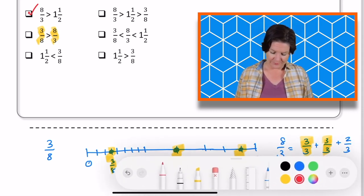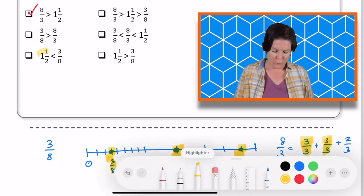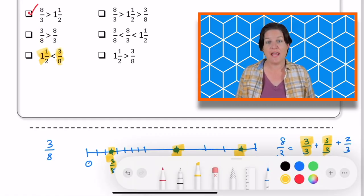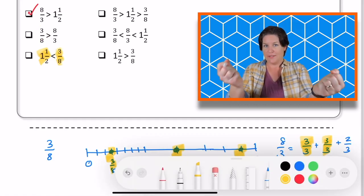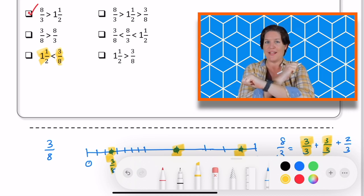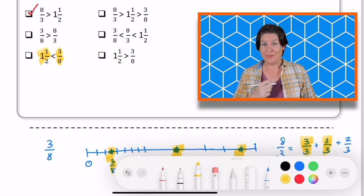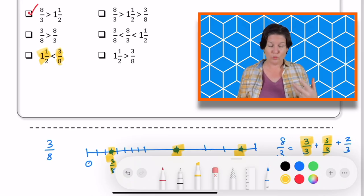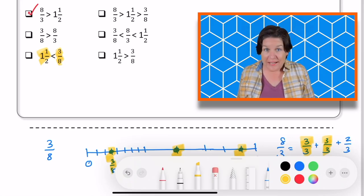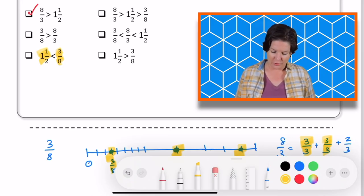The next one says 3 8ths is greater than 8 3rds. Should we keep that one or eliminate it? Let's eliminate that one because 3 8ths is way less. I can see that on my number line. So no, we're going to eliminate that one.